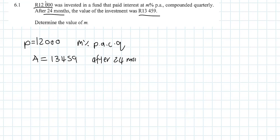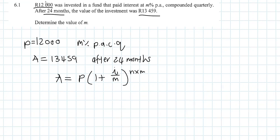After 24 months of time. This is a compound interest problem. The compound interest formula states: our end amount equals our principal amount times one plus our interest over our compounding periods, to the power of the number of years times the compounding periods. We can start filling things in — we want to find m, our unknown.